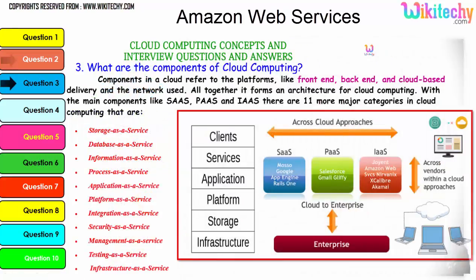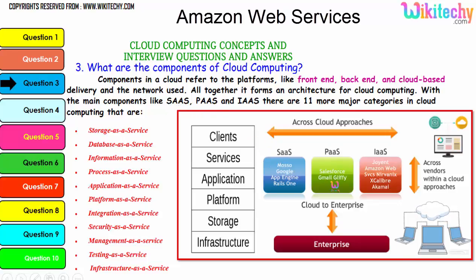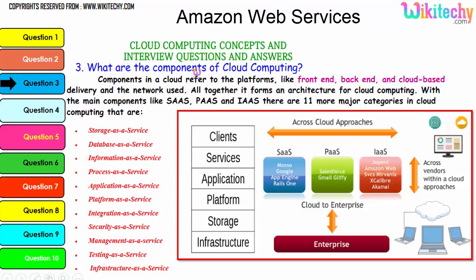Now let's talk about the components of cloud computing. Components in a cloud refer to platforms like front-end, back-end, cloud-based delivery, and the network used. Together they form the architecture for cloud computing with the main components: Software as a Service, Platform as a Service, and Infrastructure as a Service. There are 11 major categories in cloud: storage, database, information, process, application platform, integration, security, management, testing, and infrastructure as a service.